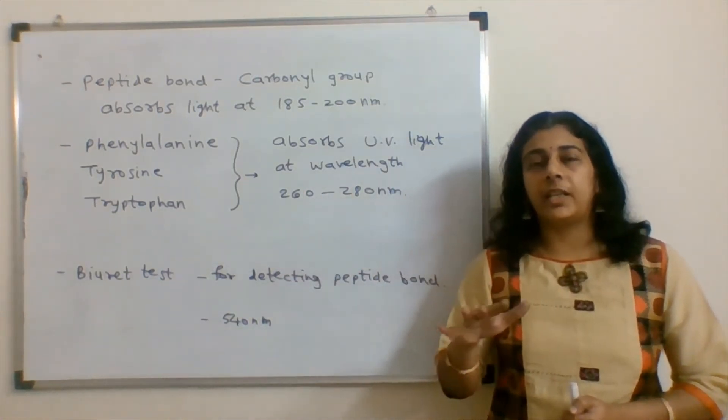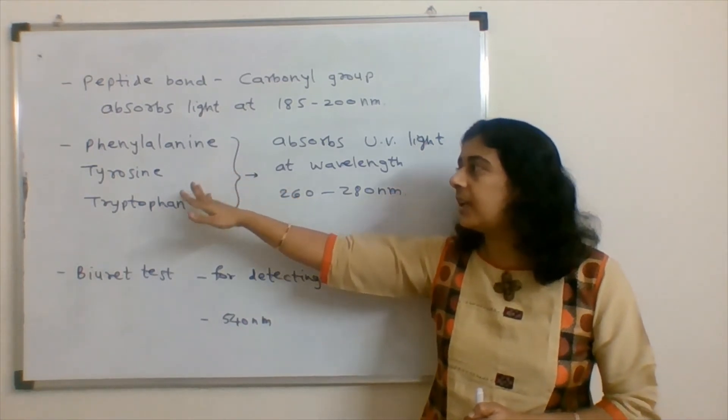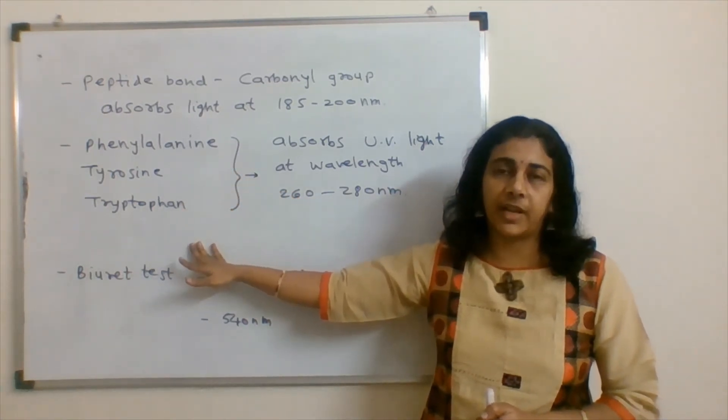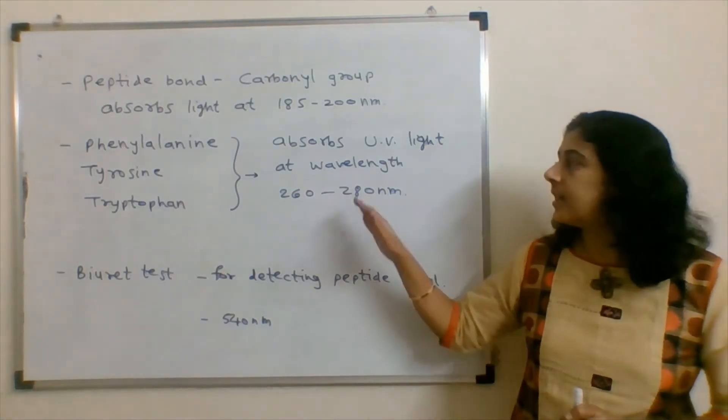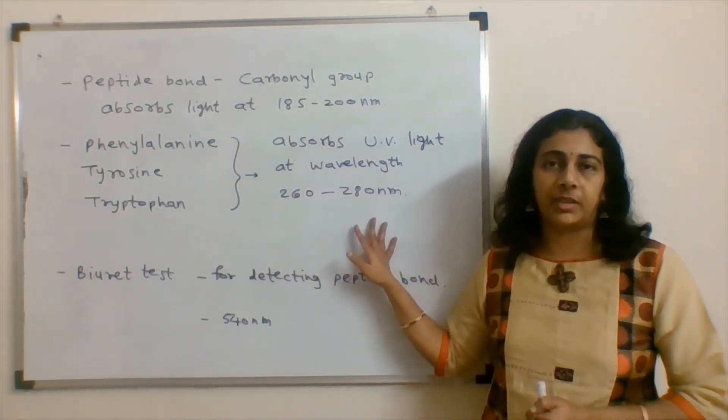If the amino acid, if the protein is having amino acids as phenylalanine, tyrosine or tryptophan in it, then that protein shows absorbance in between 260 to 280 nanometer.